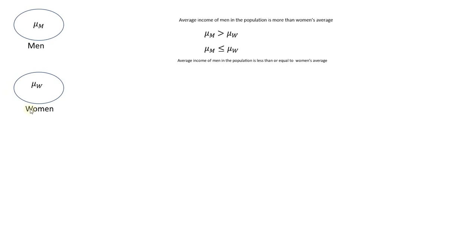Notice that one of these two hypotheses always includes equality, because equality is one of the conditions. So after we make these two possible hypotheses about the state of the income of men and women, we call the hypothesis that includes the equality — which is the average of men is less than or equal to the average of women — the null hypothesis.